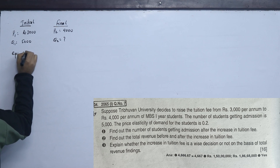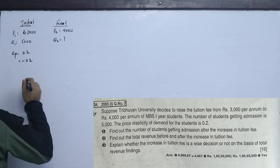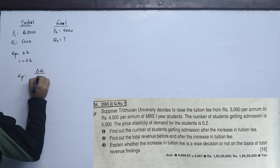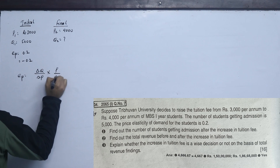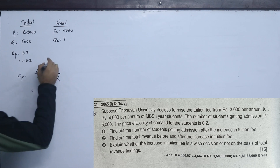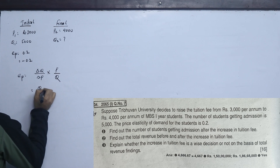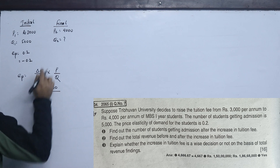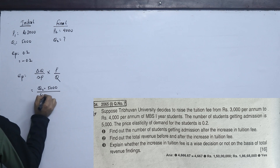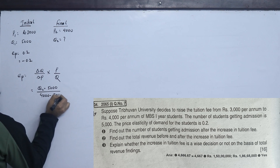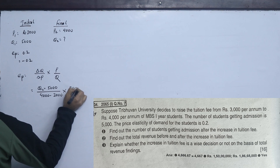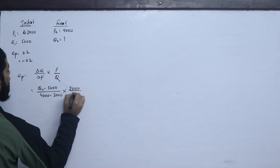The elasticity is 0.2, so we apply minus 0.2. The formula: Ep = (ΔQ / ΔP) × (P / Q). ΔQ = Q2 − Q1, where Q1 = 500. ΔP = 4,000 − 3,000 = 1,000. Initial P1 = 3,000, upon Q1 = 500.